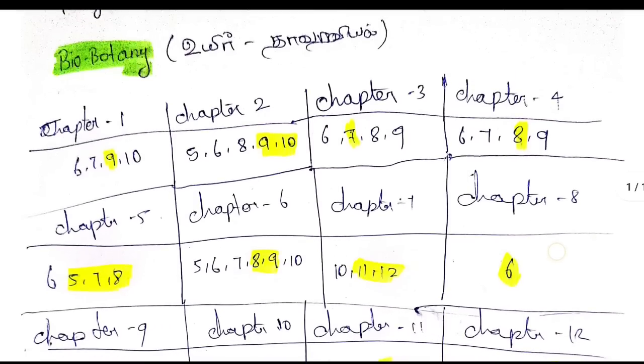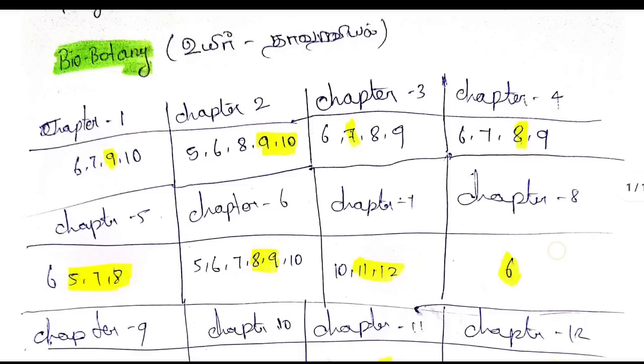Chapter 1: question numbers 6, 7, 9, and 10 are important. Question number 9 is a 5-mark question.